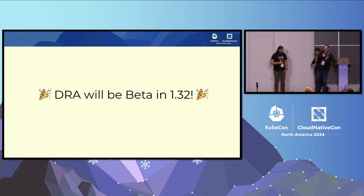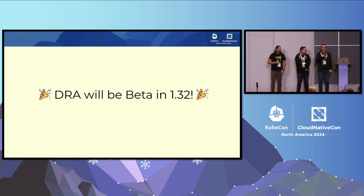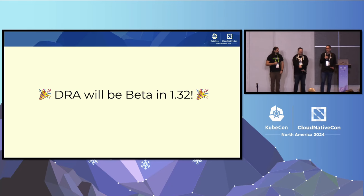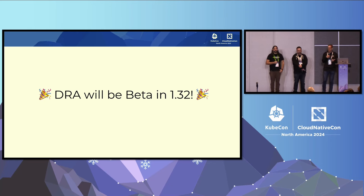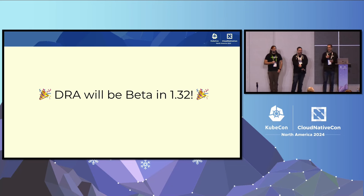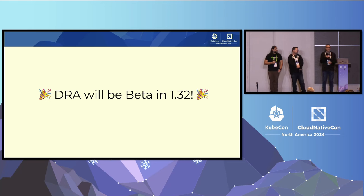I have the honor and pleasure to announce that DRA is now beta in 1.32. The corresponding pull request got merged middle of last week, well before code freeze. What that means in practice: we are making a promise that this beta API will be in Kubernetes for at least three releases. If you have been worried about using DRA because it was alpha, now is the time to really look at this API, start using it, and start asking your vendors for support for DRA, because it is now beta.